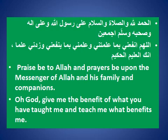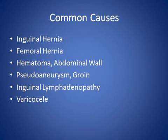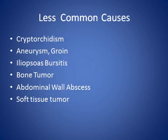My topic today is about the differential diagnosis of groin mass — common and less common causes with a close to diagnosis. The common causes include inguinal hernia, femoral hernia, hematoma of the abdominal wall, pseudoaneurysm, inguinal lymphadenopathy, other masses, and varicocele. The less common causes include cryptorchidism, aneurysm, iliopsoas bursitis, bone tumor, abdominal wall abscess, and soft tissue tumor.